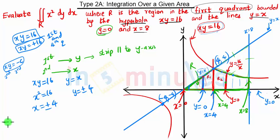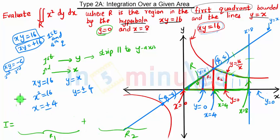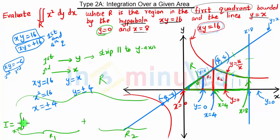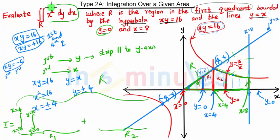Our limits will be written for region R1 plus region R2, which will be the complete region R. For region R1, x is going from 0 to 4, and y is going from 0 to y equal to x. The integrand term is x squared dy dx.